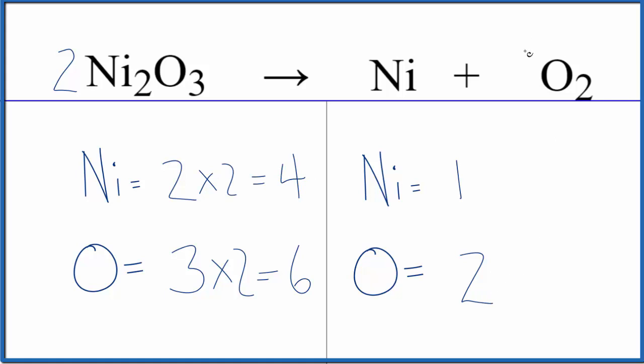Now, we could put a three here, two times three. That would give us six, balancing the oxygen atoms.